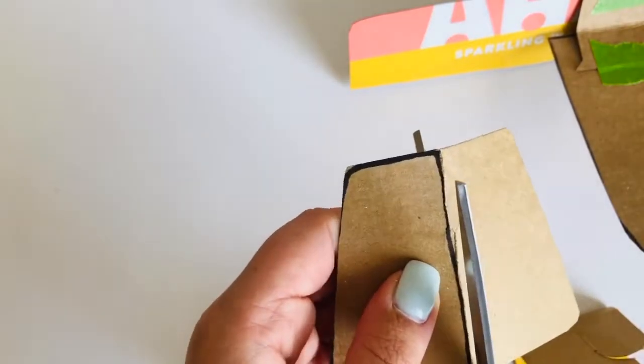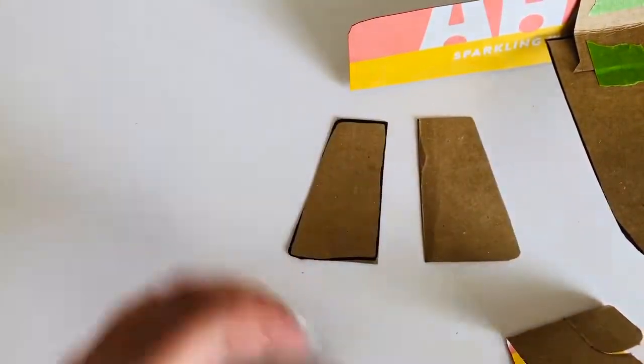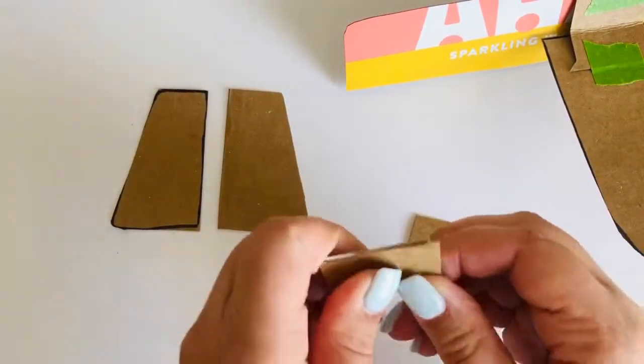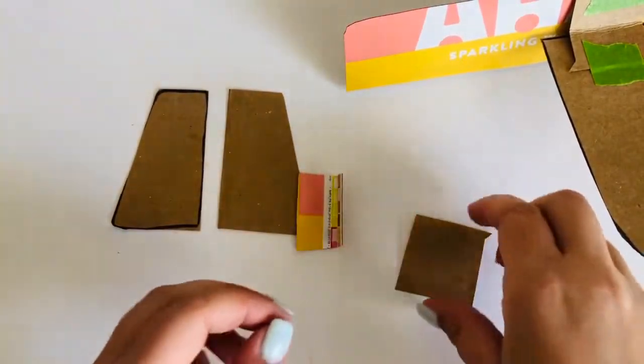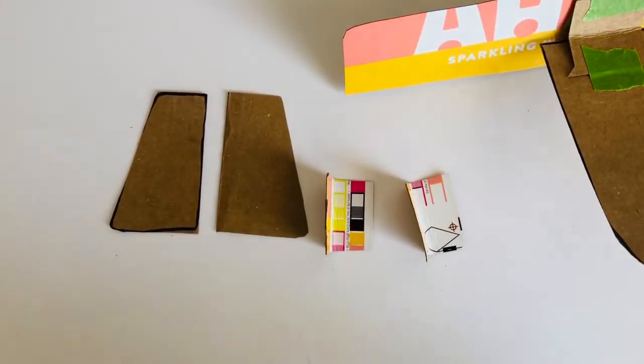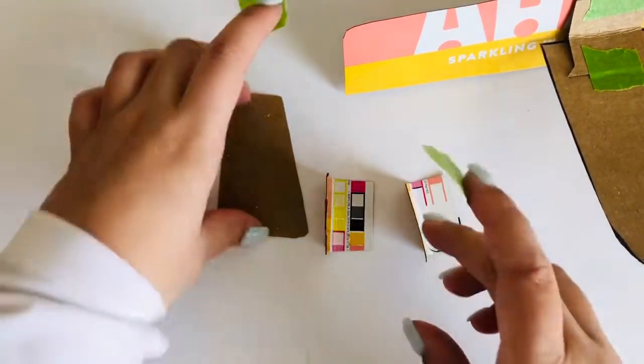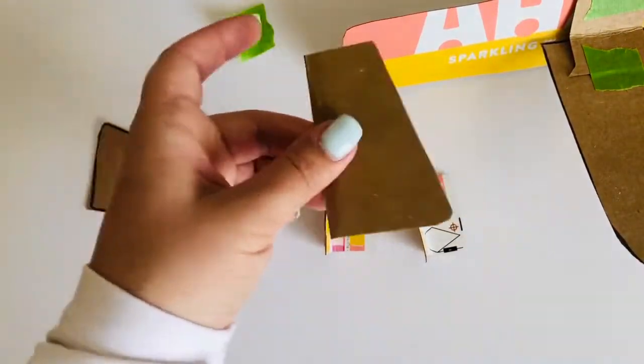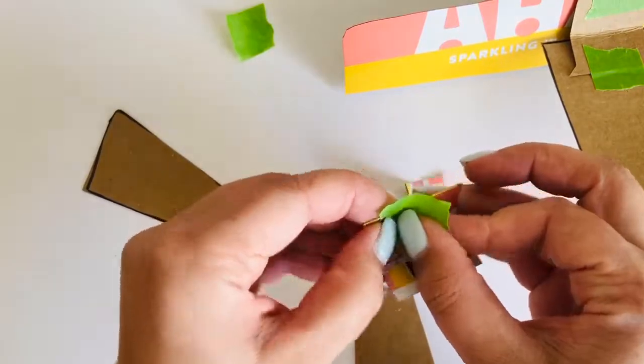Once you have drawn your trapezoid, cut it out, cut down the middle and you have two pieces. Again, you are going to make L braces to attach this to the back of the airplane. I had to make my L braces a little skinnier so that they would fit. Attach each part of the horizontal stabilizer on each side on the back of your airplane.